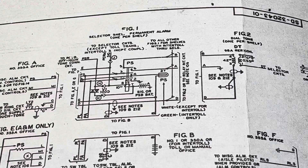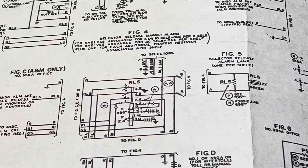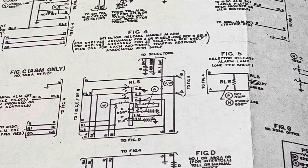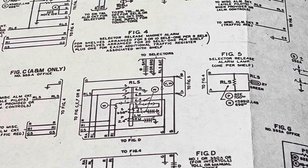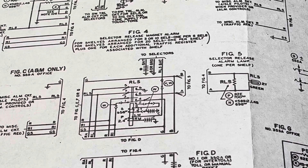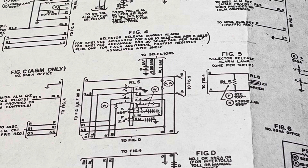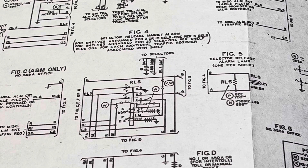I have the PS relay here showing the schematic of it. I'll show the physical relay in a moment. And this is the release alarm relay. These alarm relays are located on the left end of the shelves in the office — on the selector or connector shelves.